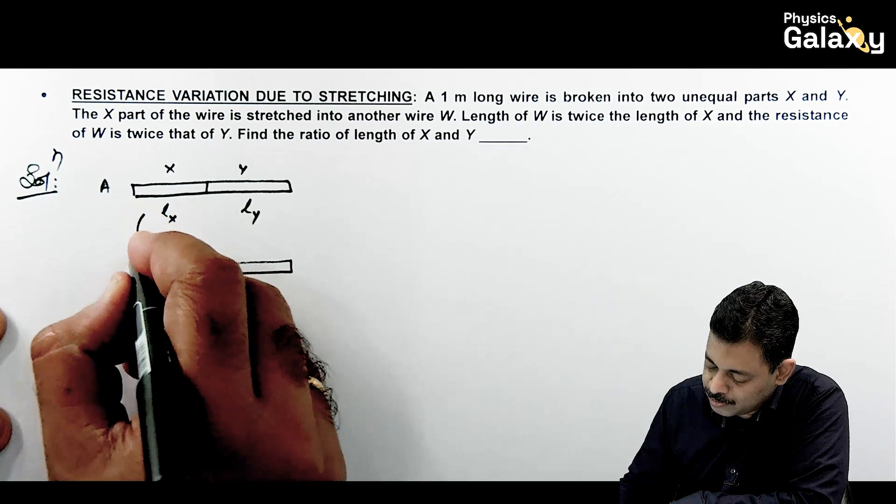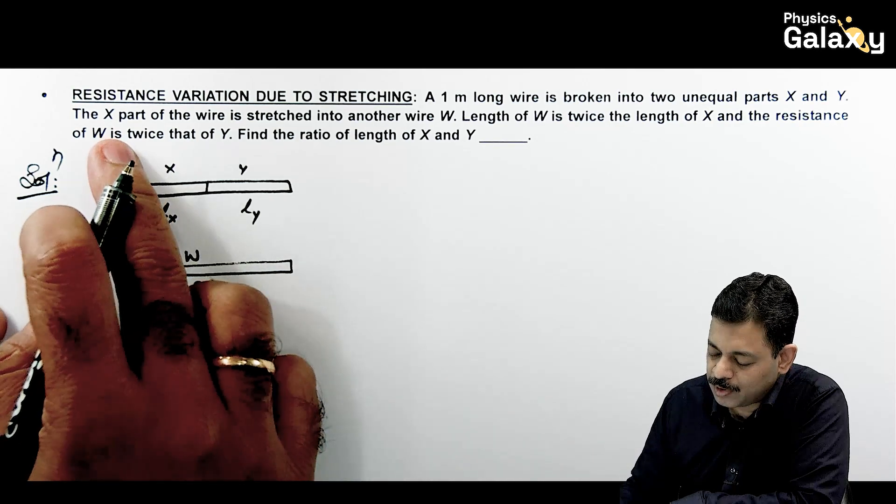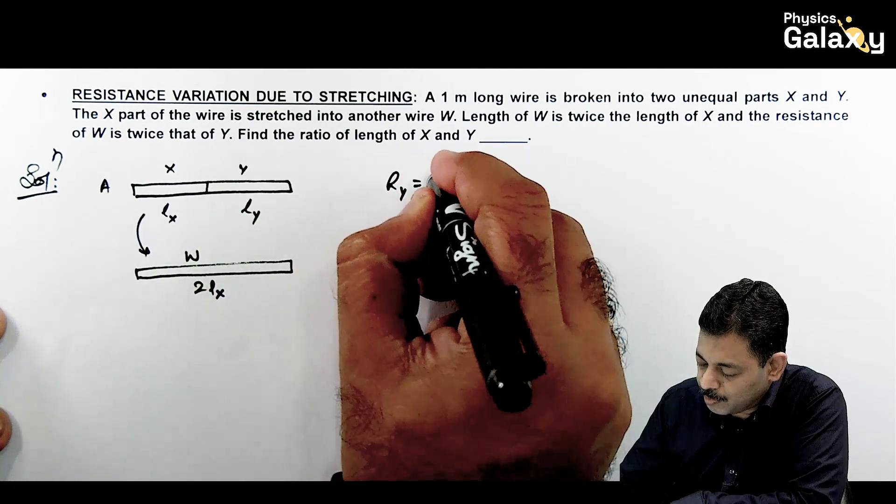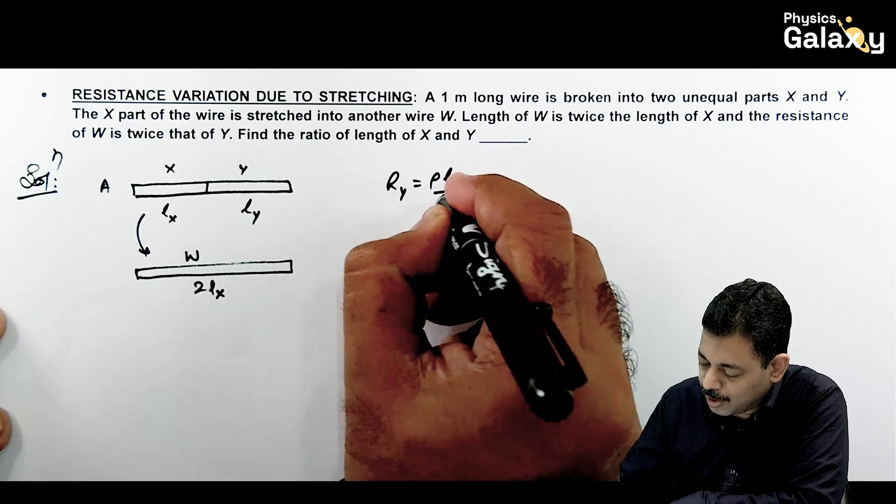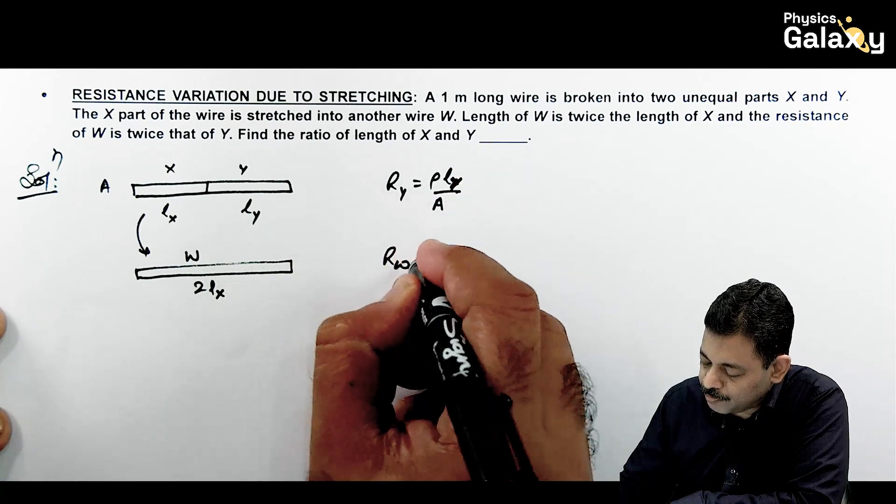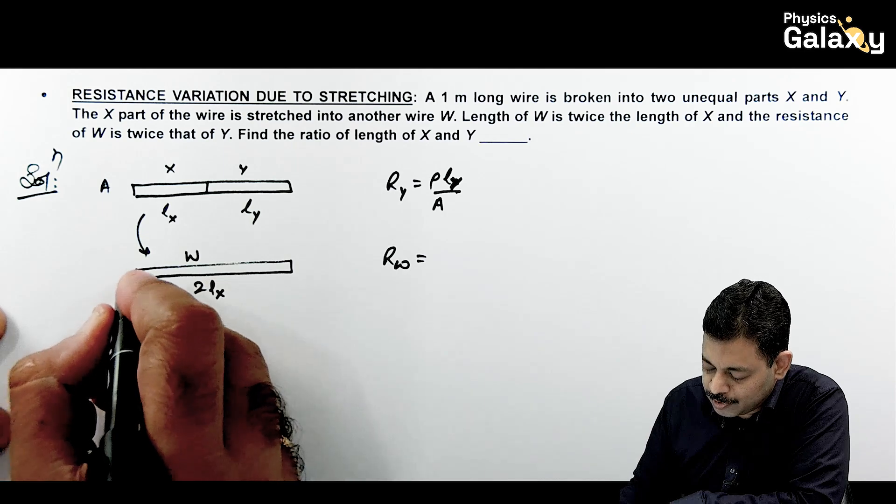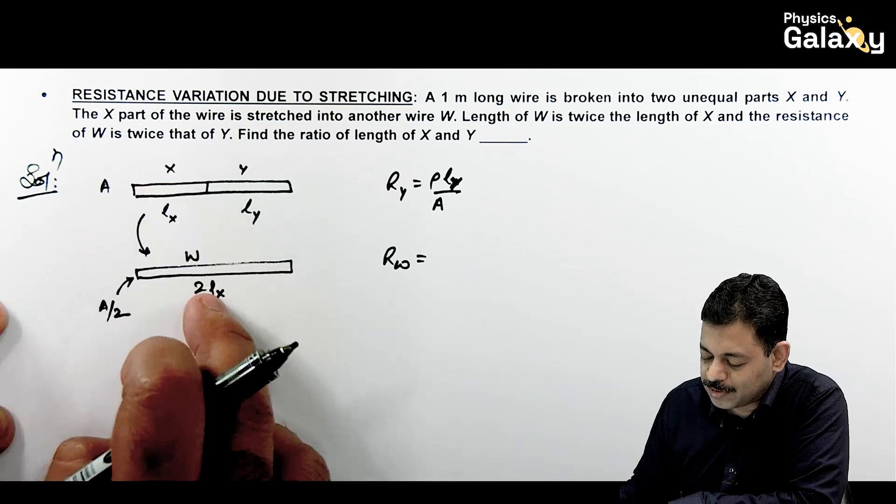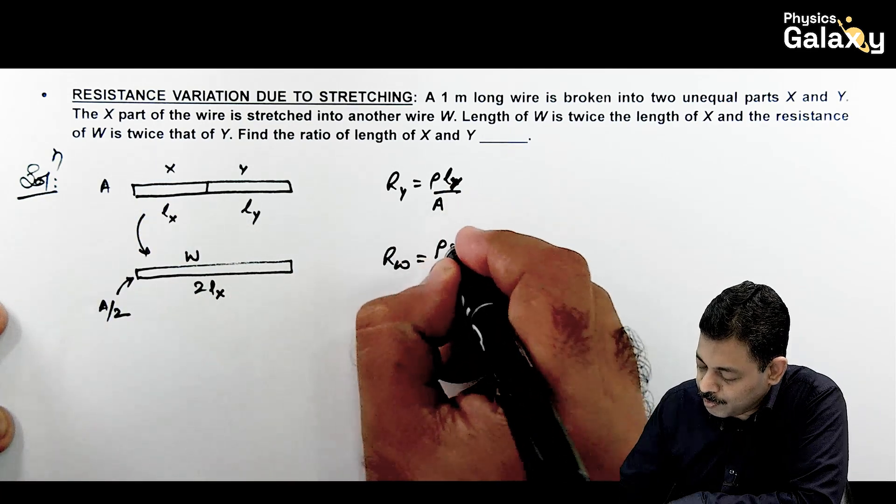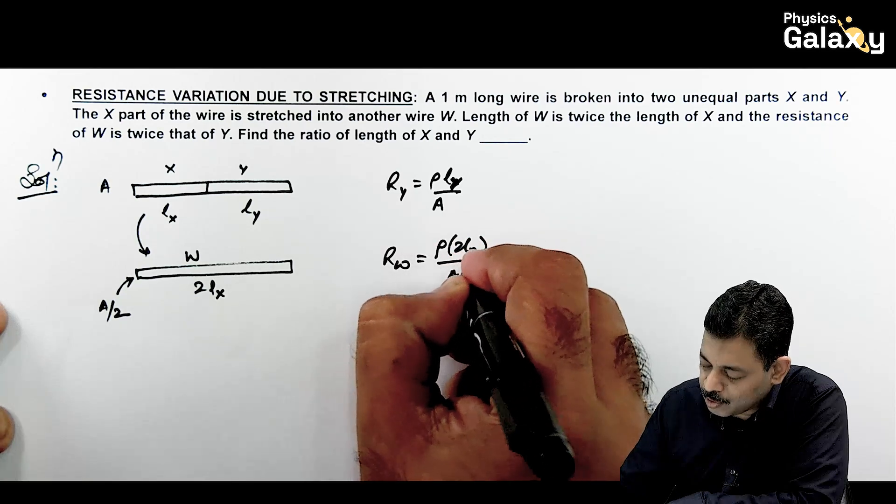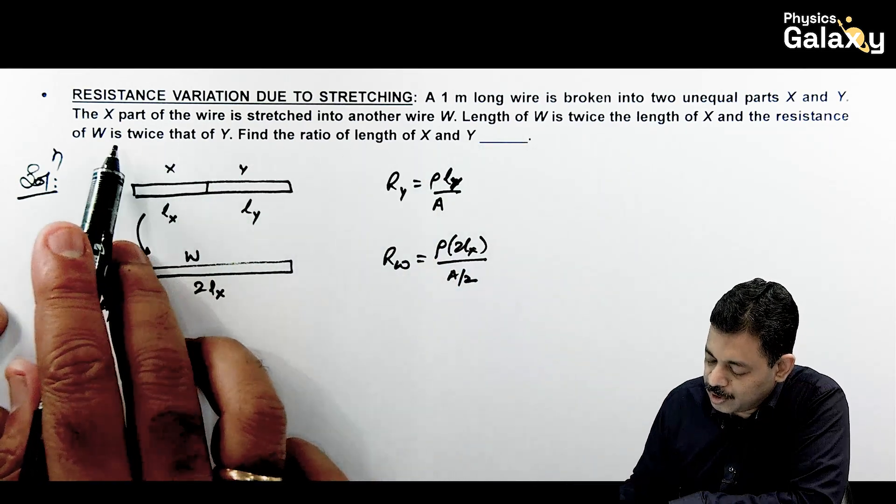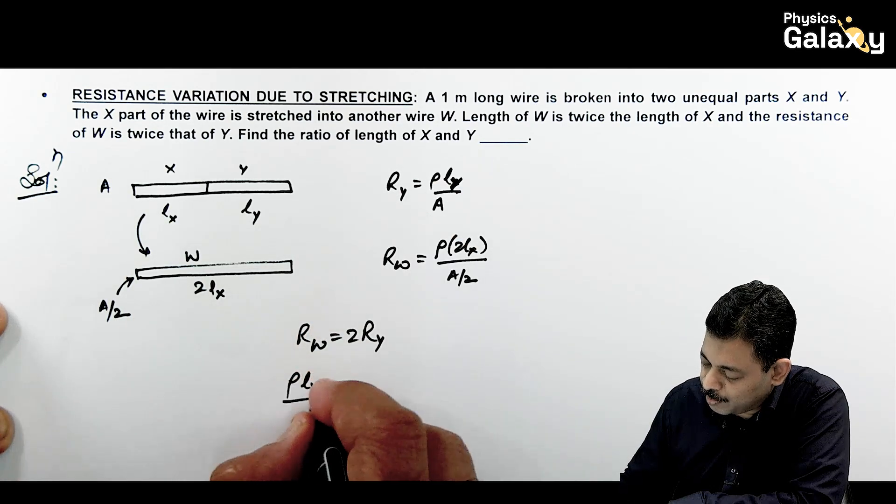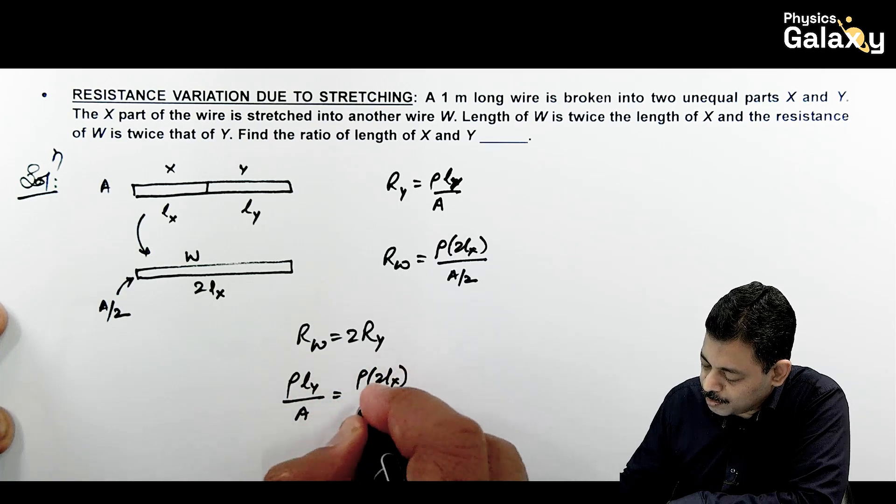We have resistance of W is twice that of Y. So if we have resistance of Y, it will be ρLY/A. And resistance of W with length 2LX and cross-sectional area A/2 (because volume should remain constant), the resistance of W will be ρ(2LX)/(A/2). Now it is saying resistance of W is twice that of Y, so RW = 2RY.